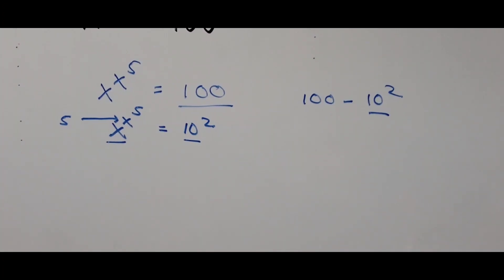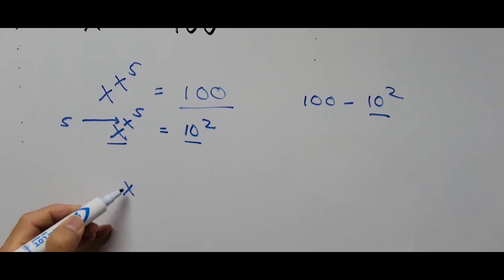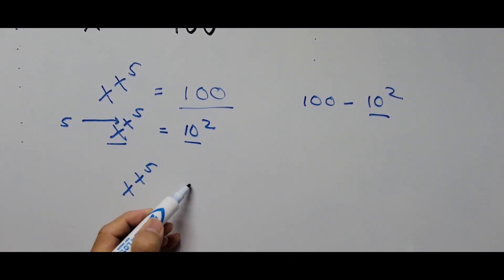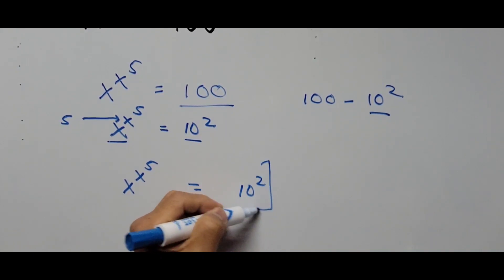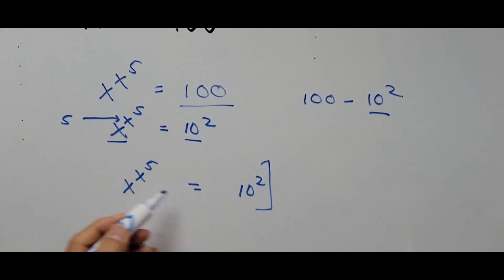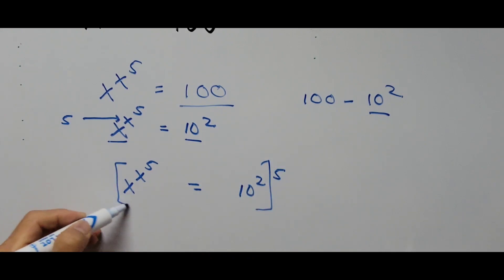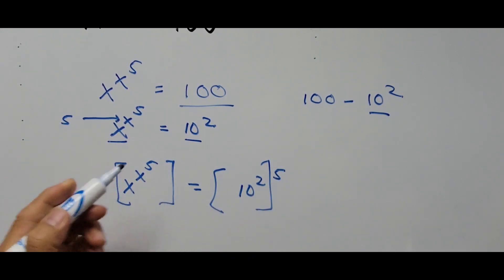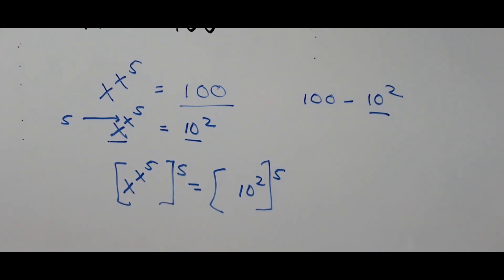The equation now becomes: x to the power of x to the power of 5, equals 10 squared, all raised to the power of 5 on both sides of the equation — raised to the 5th power.